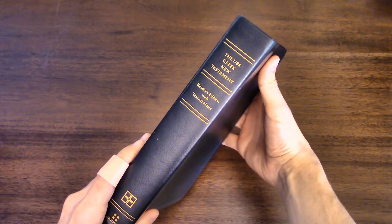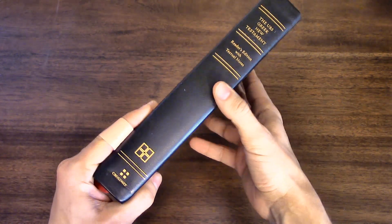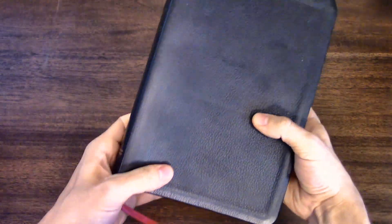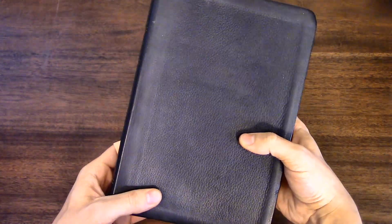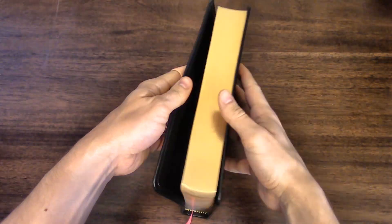This is a UBS Greek New Testament Reader's Edition with the textual notes published by Crossway. And this one is in top grain leather. This is a really rare edition. You can't really find it anywhere on the internet.